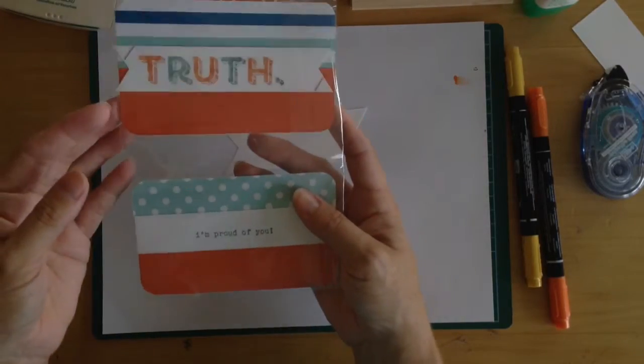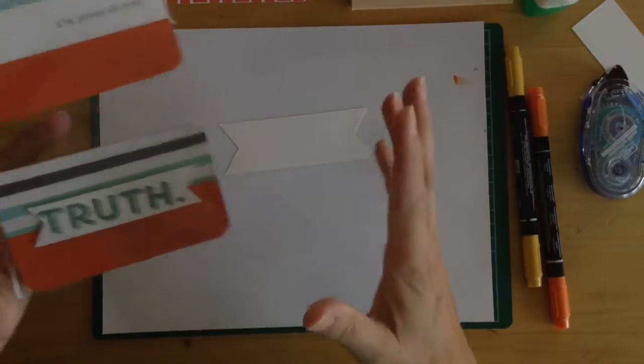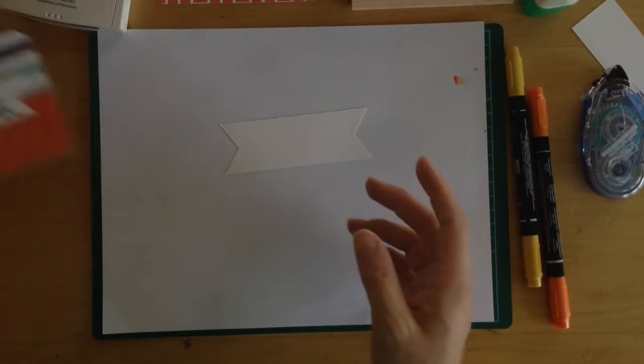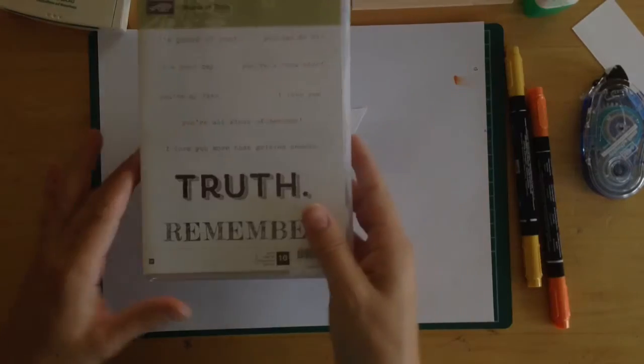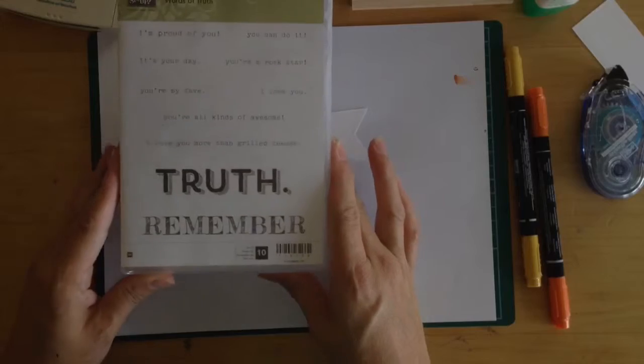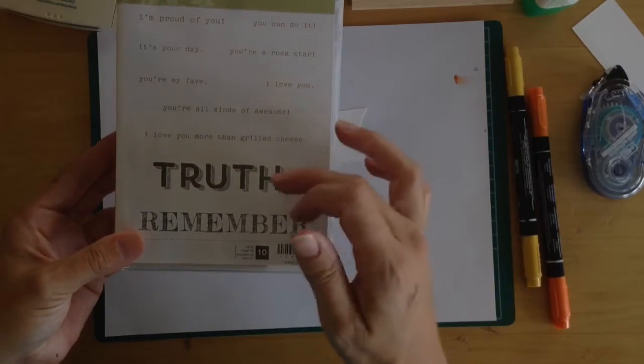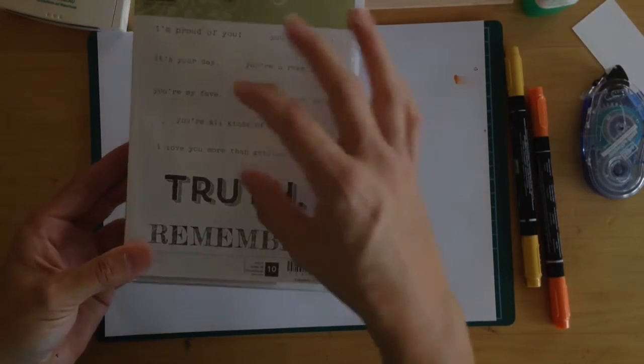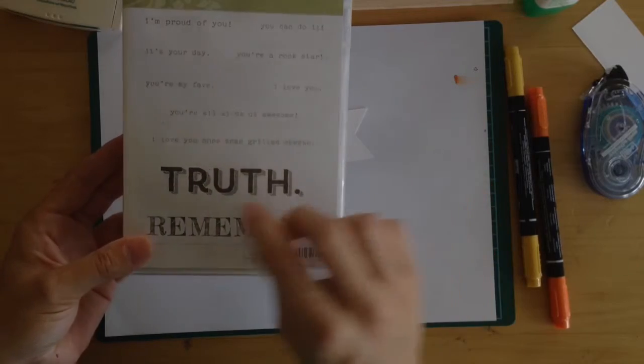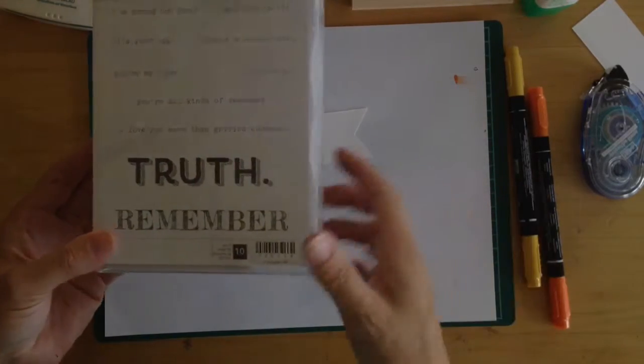I just think they're really fun and quick to make, very quick to make. So I'm going to be using the Words of Truth stamp set. This is just a great, clever stamp set. It comes with funny little sayings. My favorite is 'I love you more than grilled cheese.'